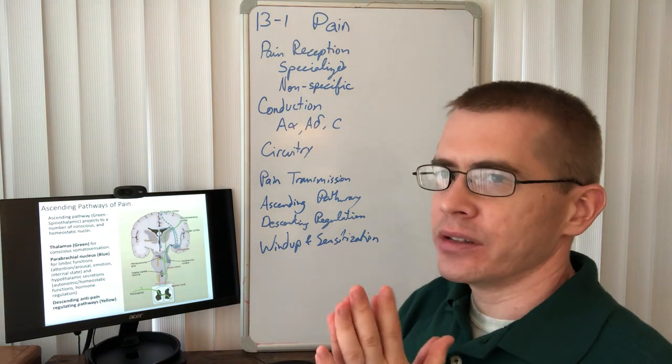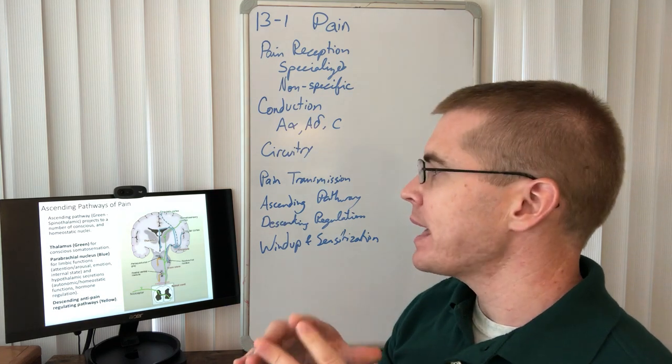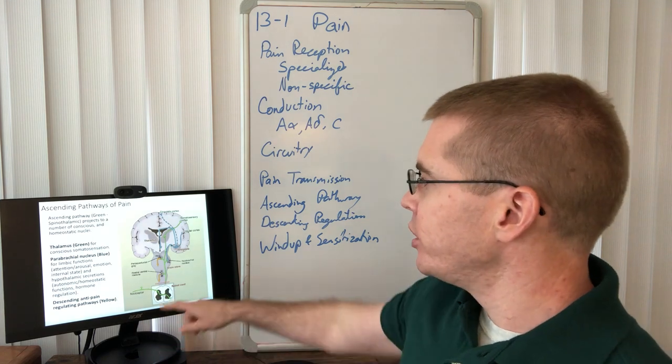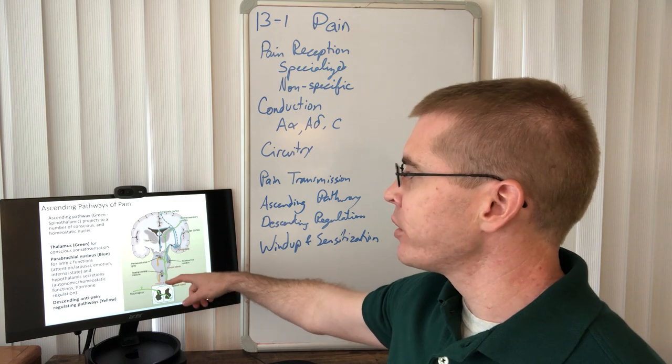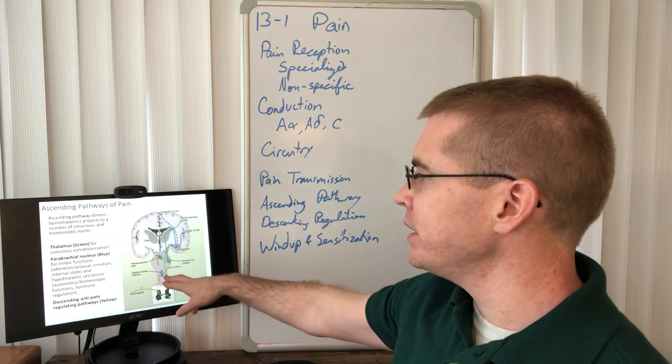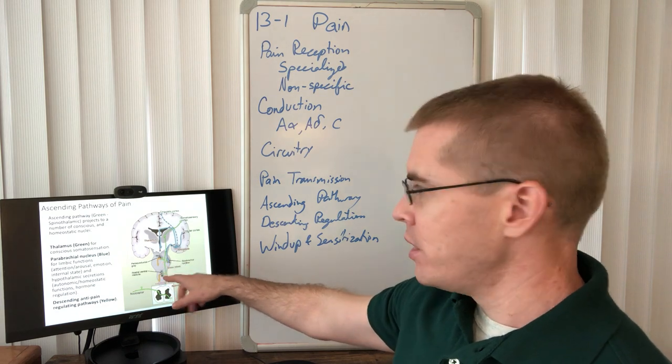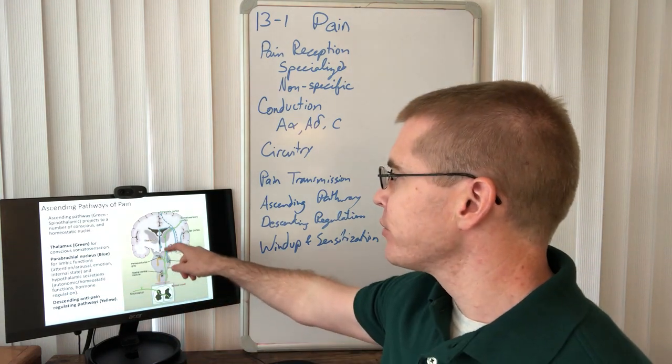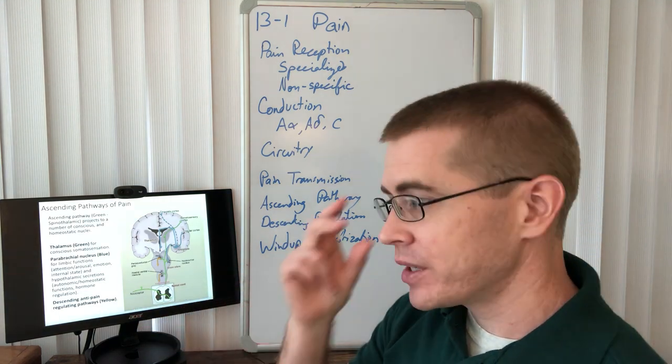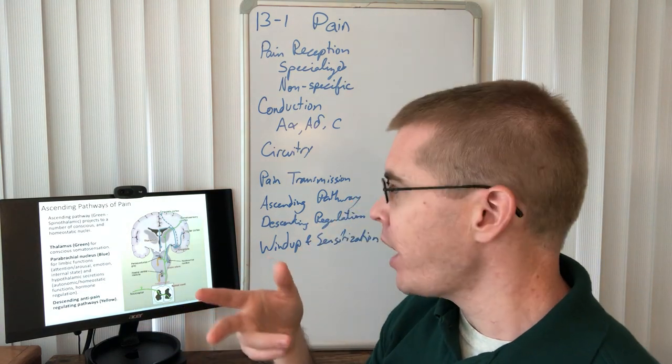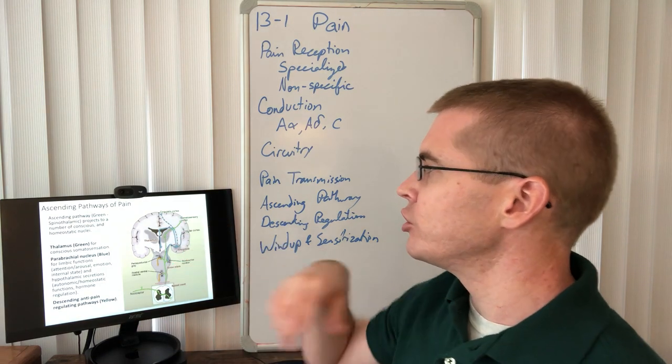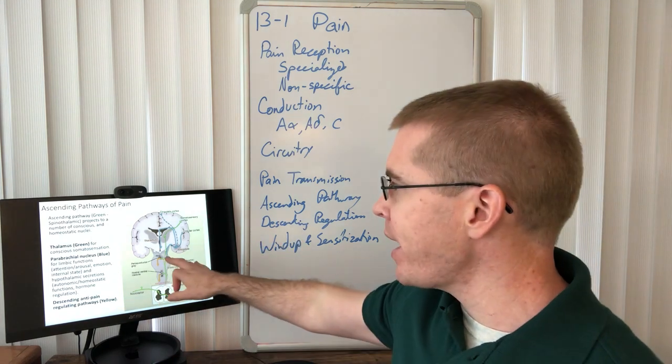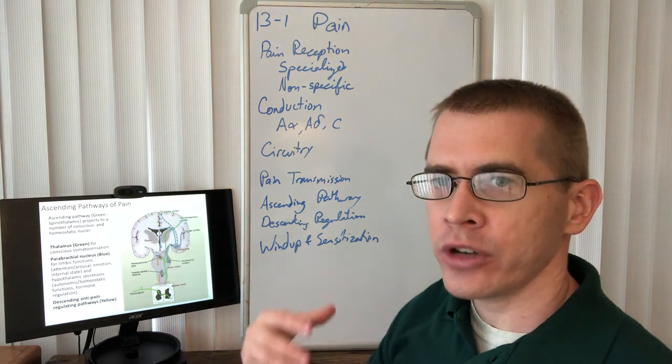Now, some interesting things about these ascending pathways is that they collateralize on a number of different autonomic structures that we've talked about. So here we have that ascending like spinothalamic pathway. And we can see that it's sending collaterals to the parabrachial nucleus and the periaqueductal gray. It's sending information up to the thalamus, for example, the VPL of the thalamus. And so that VPL of the thalamus is then sending information to the somatosensory cortex. So that's our conscious sense of pain is through the thalamus.